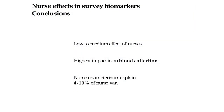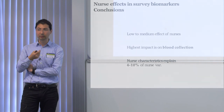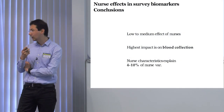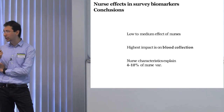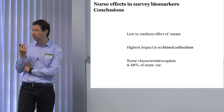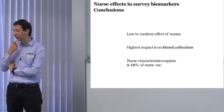A few conclusions: we found low to medium effects of nurses — around 10% ICC — and that might influence standard errors. As a survey methodologist, I would argue we should take that into account at least as a sensitivity check. We can do this because we have that information in the data, so before publishing you could just control for it and see if you get different results. The biggest impact, at least in Understanding Society, is on blood collection, so we might want to offer more training especially for difficult cases.